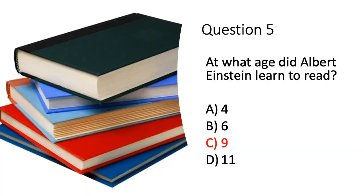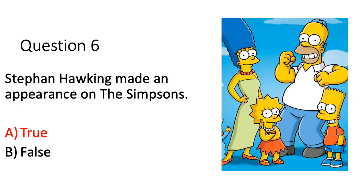Question five: Albert Einstein learnt to read at age nine. The final question in this round: Stephen Hawking made an appearance on The Simpsons — that was actually true. He also appeared on many other TV programmes, such as Star Trek, and even appeared on Red Nose Day in 2015.